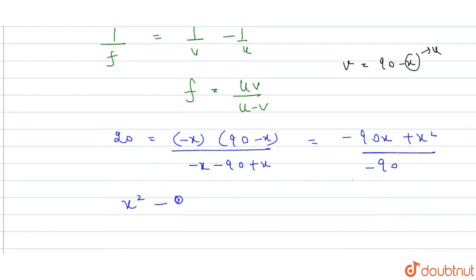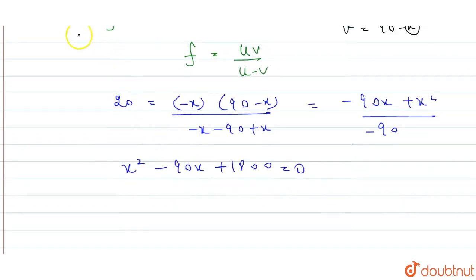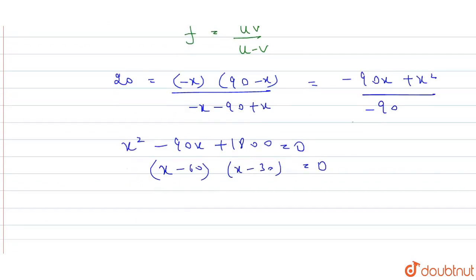x square minus 90x plus 1800 equals 0. This is a quadratic equation. If we factorize, what will it be? x minus 60 times x minus 30 equals 0. We will get two values of x.